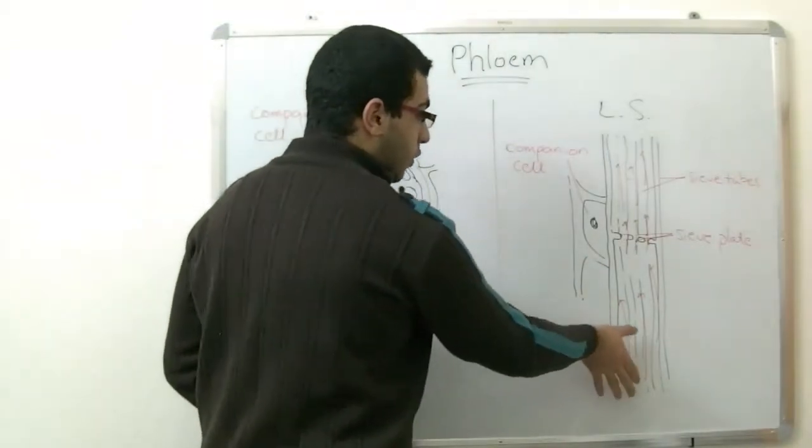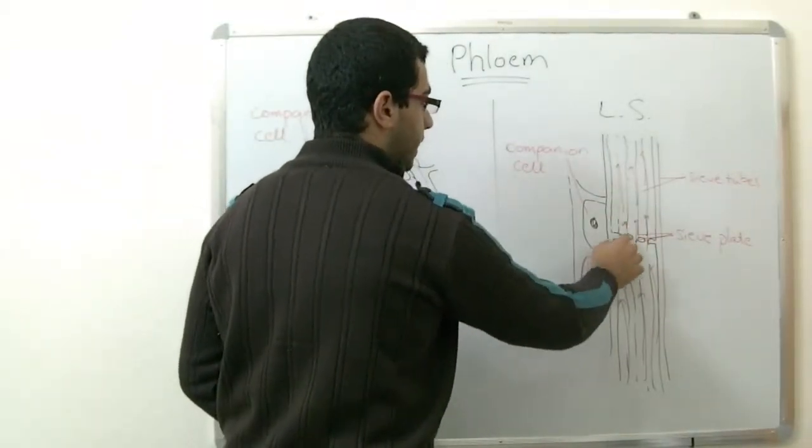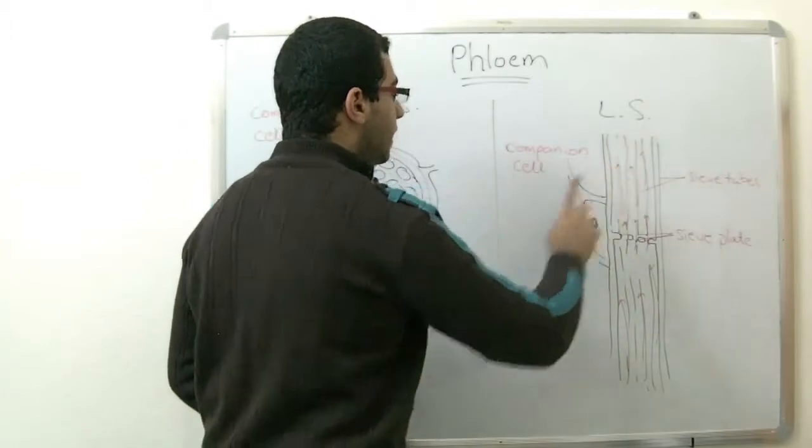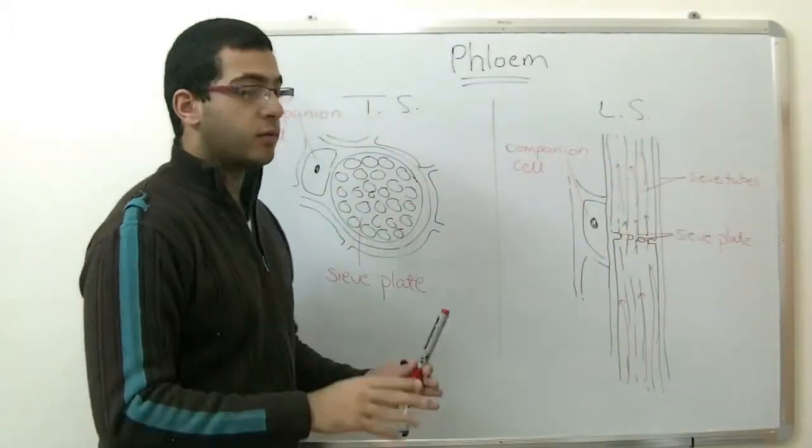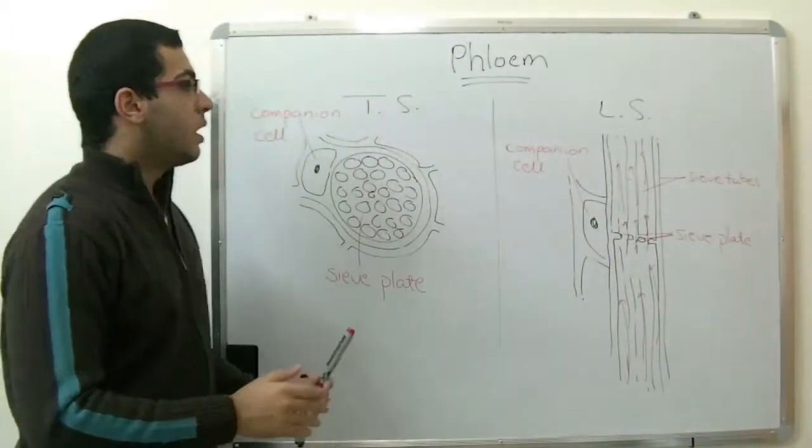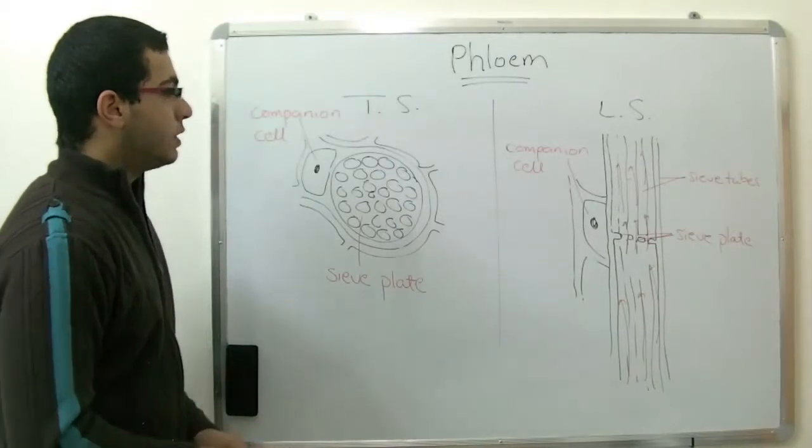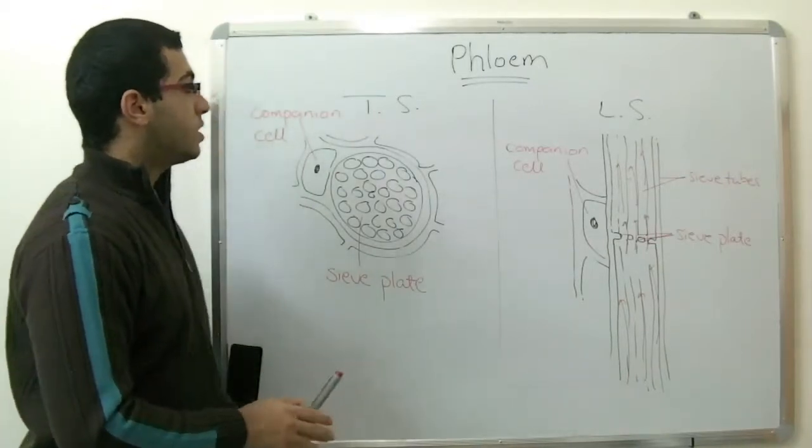The cytoplasm moves from one cell to another through these pores until they reach the various parts of the plant. And of course, the cytoplasm is carrying the organic-made food. This is the function of the phloem.